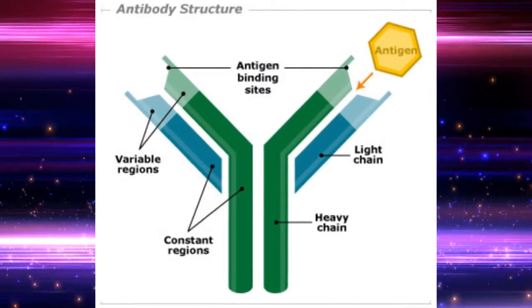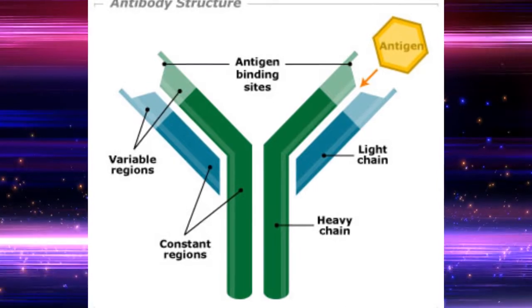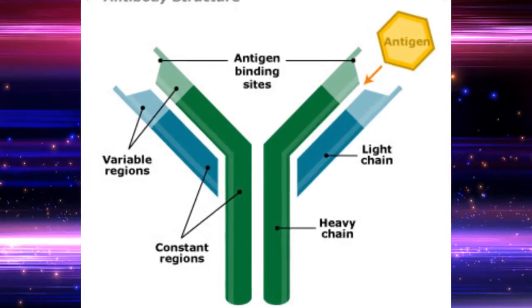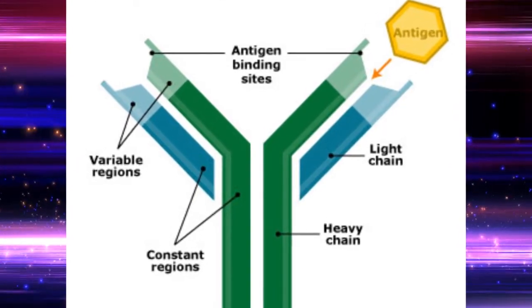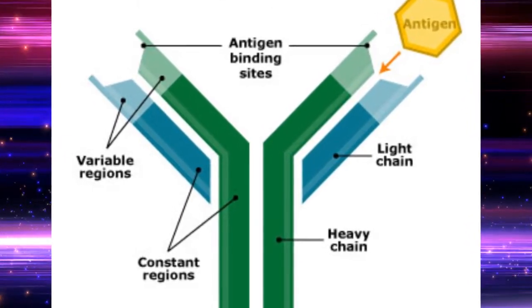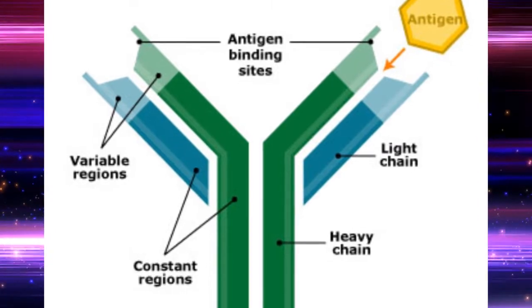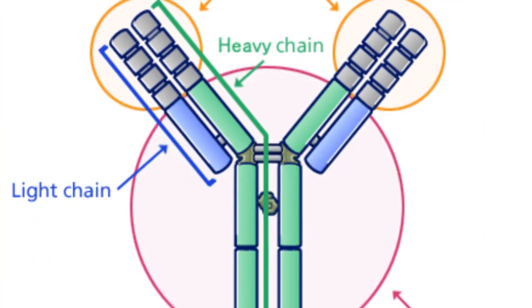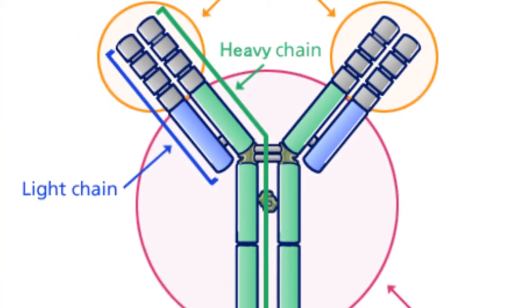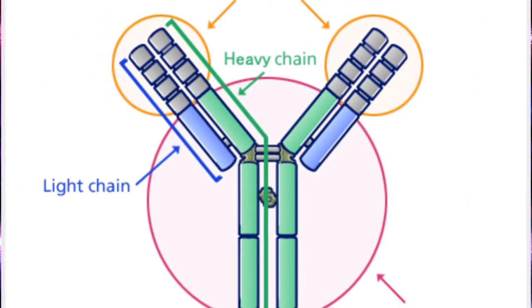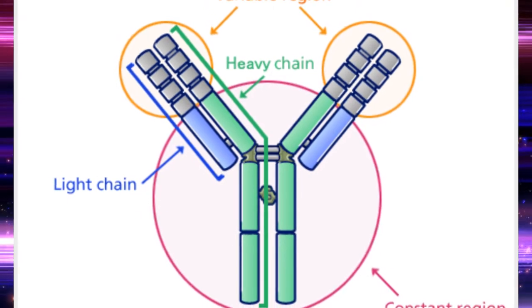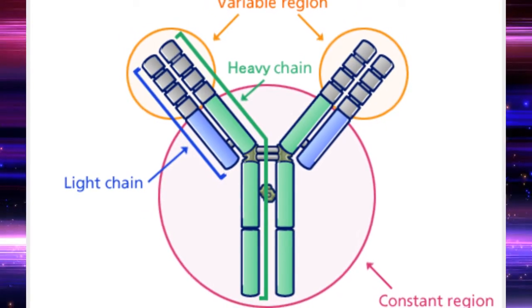Each tip of the Y of an antibody contains a paratope that is specific for one particular epitope on an antigen. The amino acid sequence in the tips of the Y varies greatly among different antibodies.